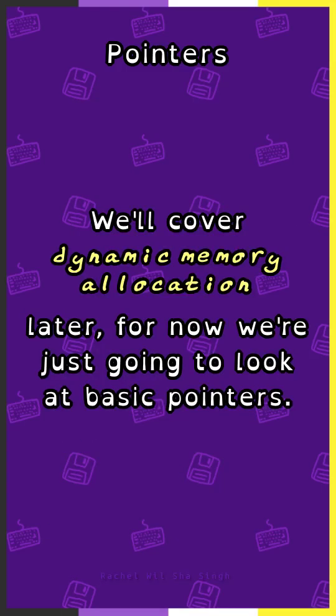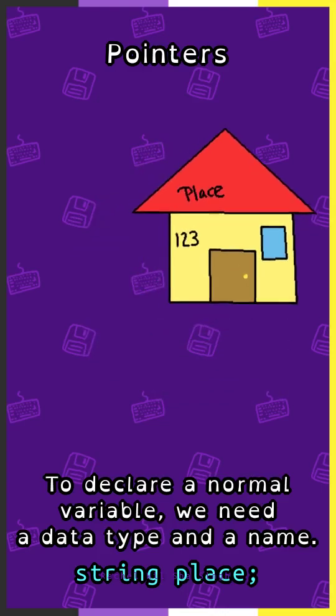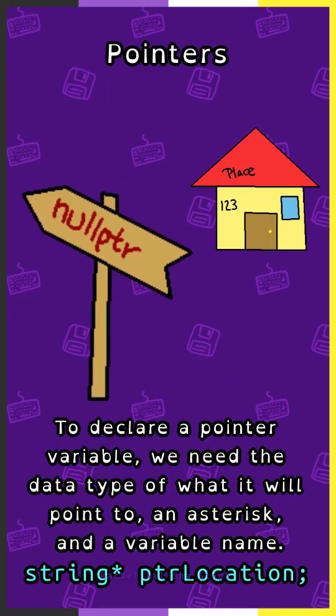We'll cover dynamic memory allocation later. For now, we're just going to look at basic pointers. To declare a normal variable, we need a data type and a name. To declare a pointer variable, we need the data type of what it will point to, an asterisk, and a variable name.